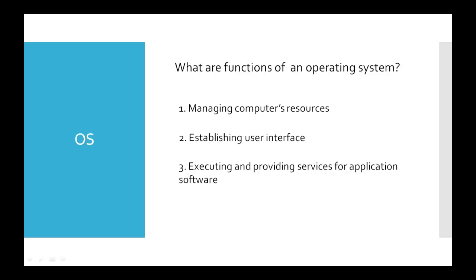When it comes to processor management, the operating system needs to allocate enough of the processor's time to each process and application so that they can run as efficiently as possible. This is particularly important for multitasking. When the user has multiple applications and processes running, it is up to the operating system to ensure that they have enough resources to run properly.